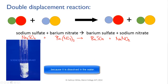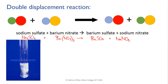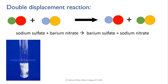Here's a quick task for you: using what you know about separations, work out a way that you could recover the two products of this reaction — barium sulfate and sodium nitrate — in their pure solid form.